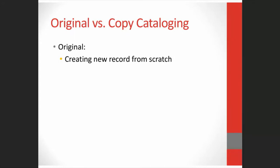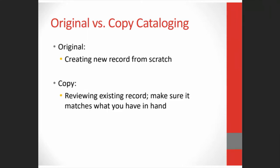Original cataloging means that you are creating a new record basically from scratch and you must decide what goes in the record. It can take hours depending on the item you have in hand. This is what librarians used to do for everything before the idea of shared or copy cataloging came along. You're typically going to do original cataloging for rare or local items. Most of the time, public libraries do shared or copy cataloging, meaning you're reviewing someone else's cataloging and making sure it matches what you have in hand — usually a few minutes instead of hours — so we'll probably use copy cataloging for Bob.